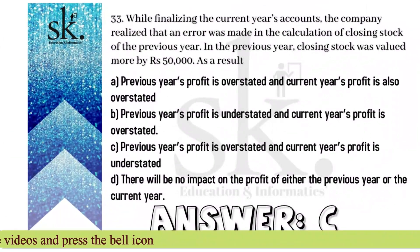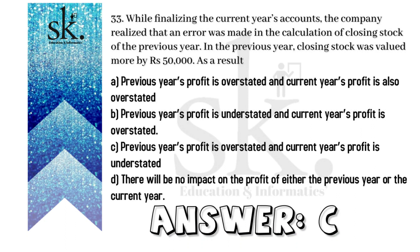The next question: while finalizing the current year's account, the company realized that an error was made in calculation of the closing stock of the previous year. The closing stock was valued more by rupees 50,000. Since closing stock is a key component in the trading account, a higher amount in the previous year's closing stock valuation will inflate the profit. The answer will be C — previous year profit is overstated and current year profit will be understated.